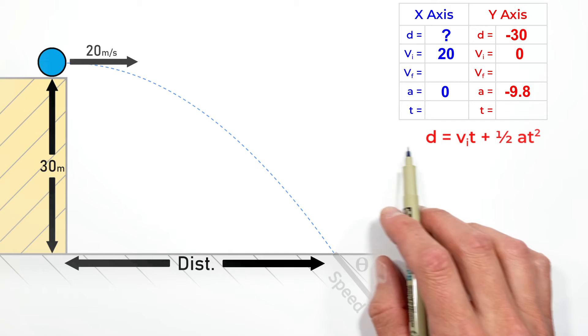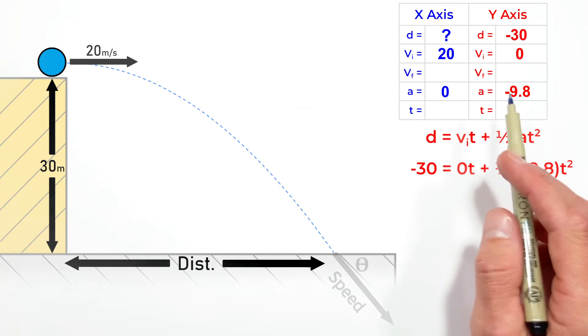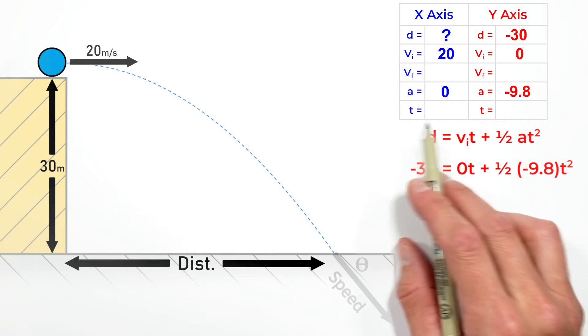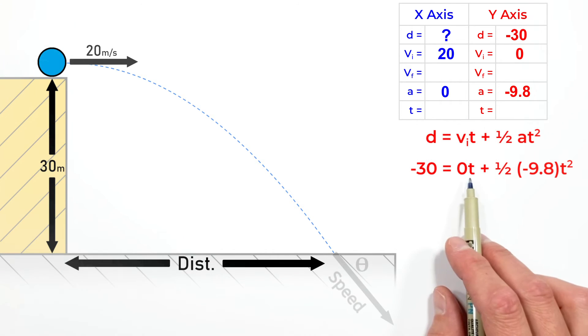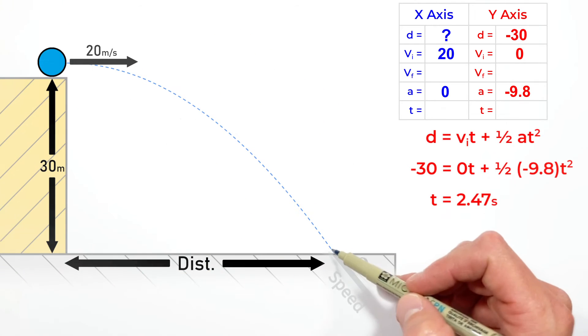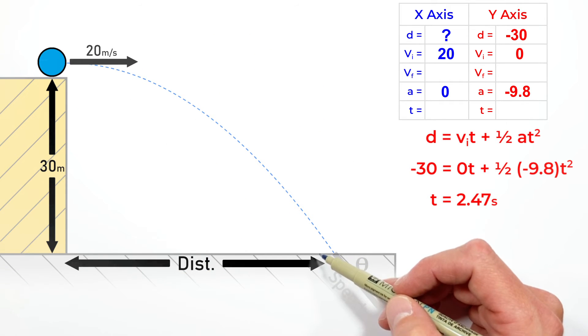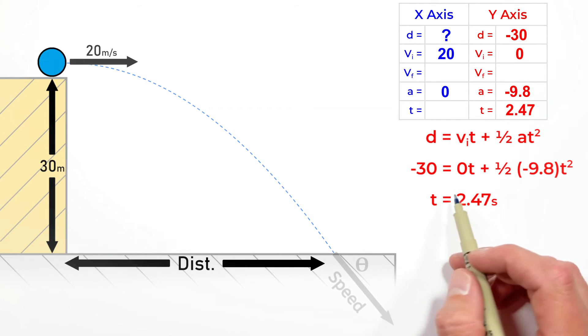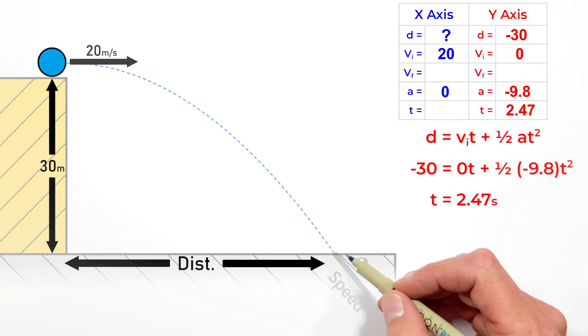Using the displacement equation and plugging in the numbers only from the y-axis into that equation, we can solve for the time it takes the ball to move downward 30 meters. We find it takes 2.47 seconds for the ball to move from the top of the cliff to the ground.